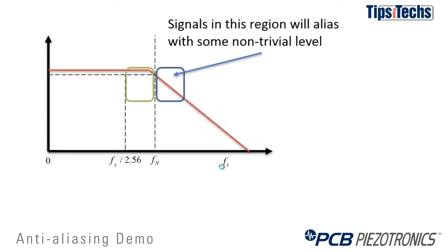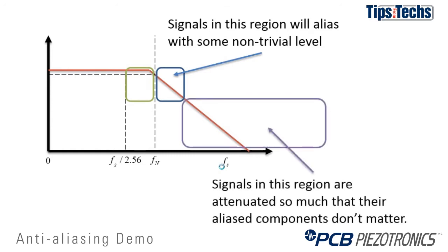Looking at the region just beyond the cutoff frequency of this filter, we can see that we may still alias back with some non-trivial level. So typically we don't take our data right up to the Nyquist frequency. A lot of times we'll use a factor of the sample rate divided by 2.56 to give us a safety margin on the rolloff of the analog filter, because very high frequency signals will be rolled off significantly and won't contribute after aliasing back into the frequency region of interest.